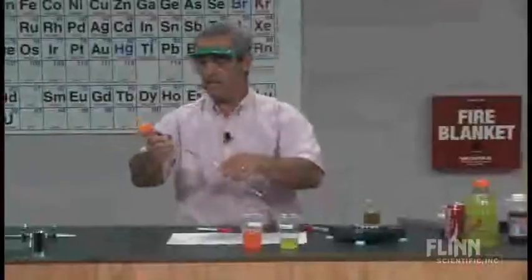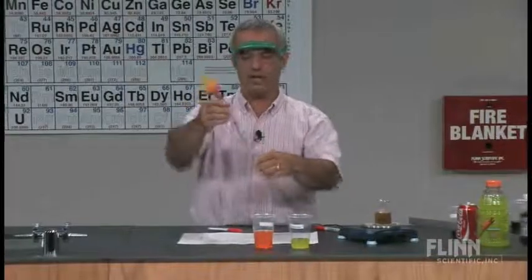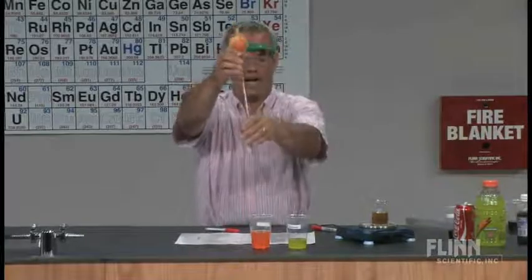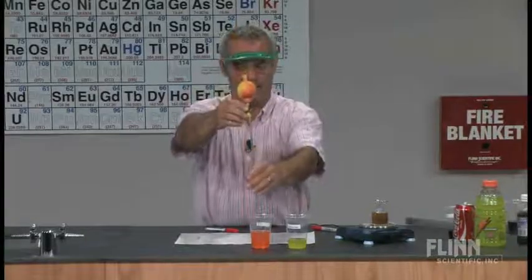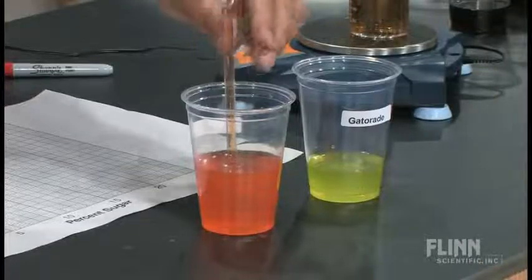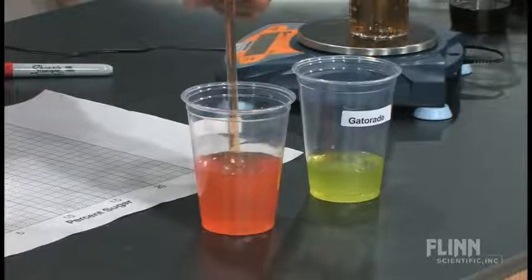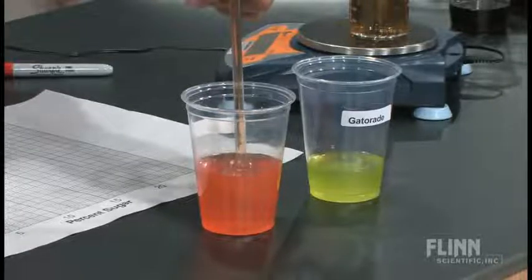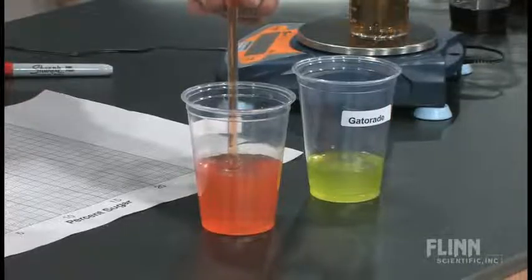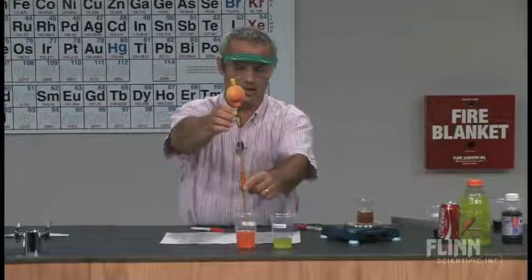Orange soda is next. By the way, this was poured back and forth between cups to get rid of the carbonation. You can think about why that's the case — if I did this with a freshly opened bottle of soda, I'd be having all kinds of bubbles in here, and that would obviously throw off the reading. I'd have a bunch of air mixed in. Which direction would that throw it off? Those bubbles would be taking the place of solution and making the mass come out too low.